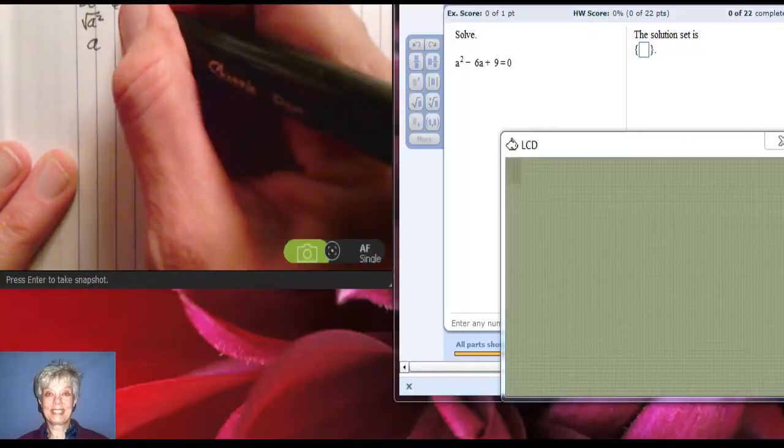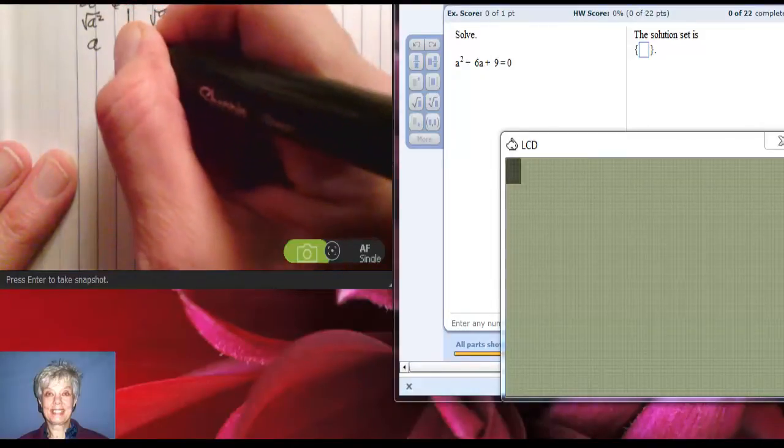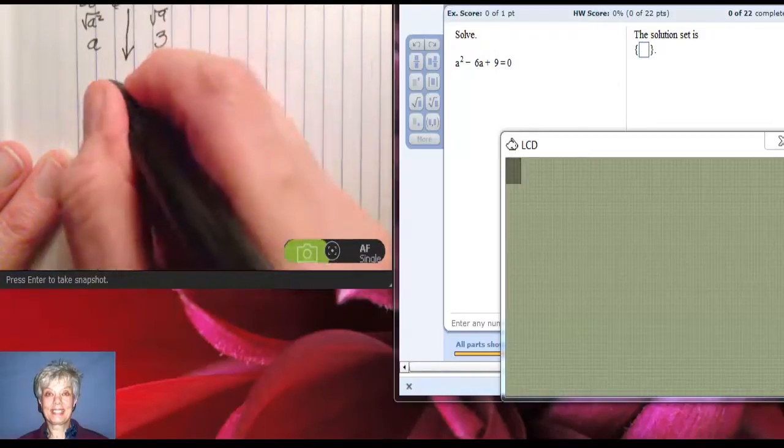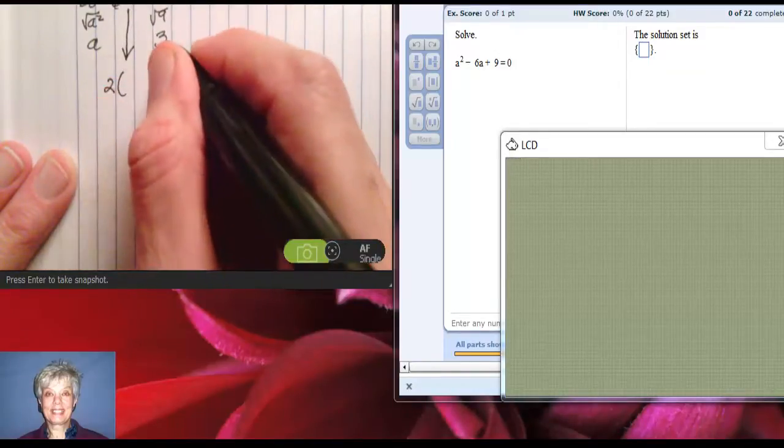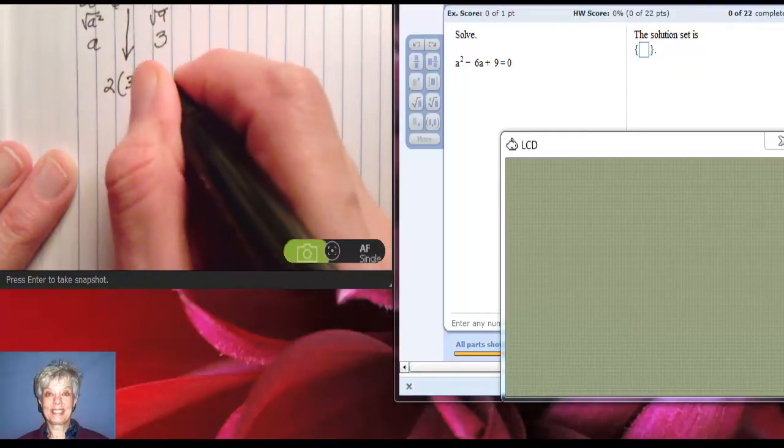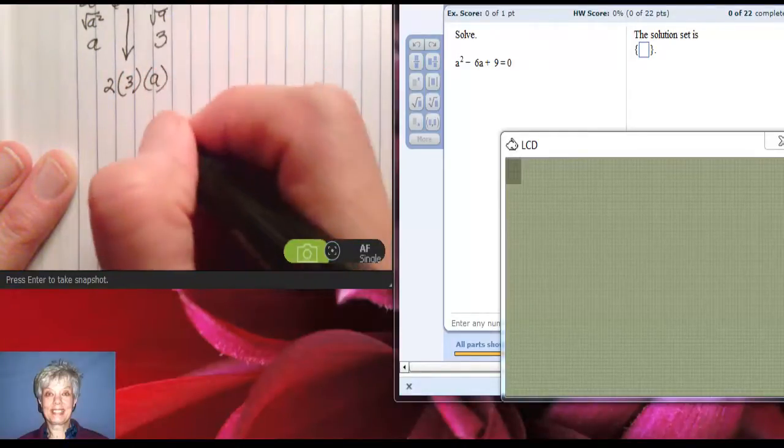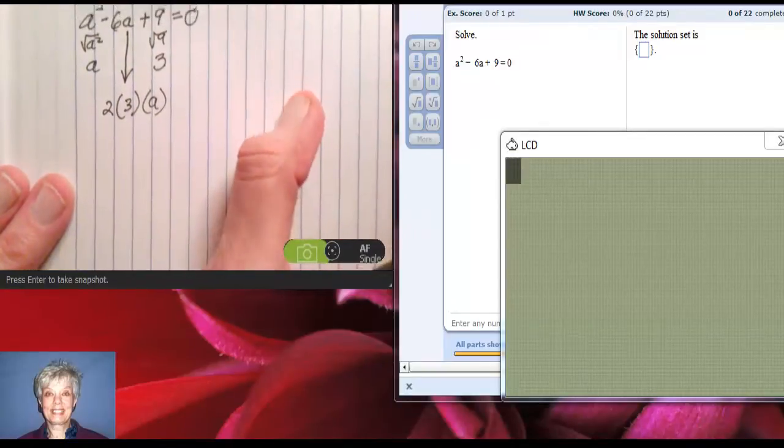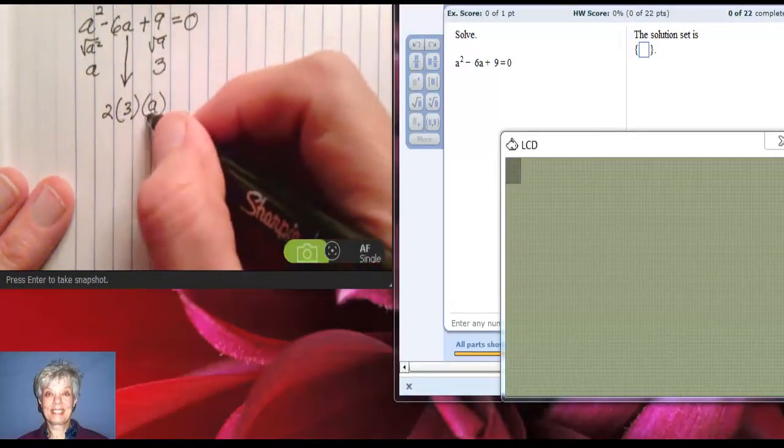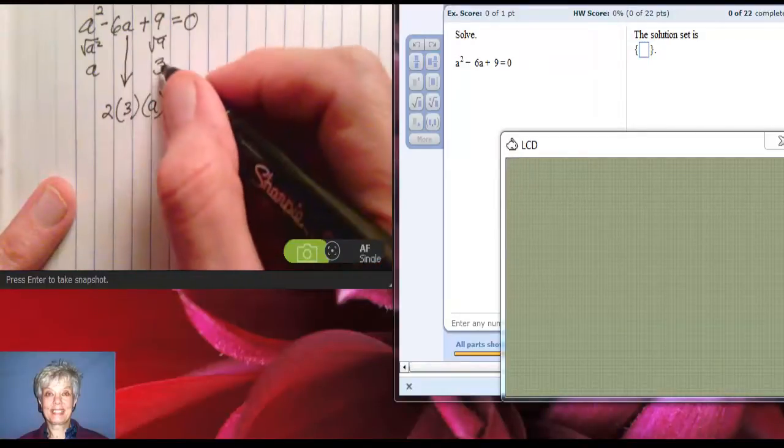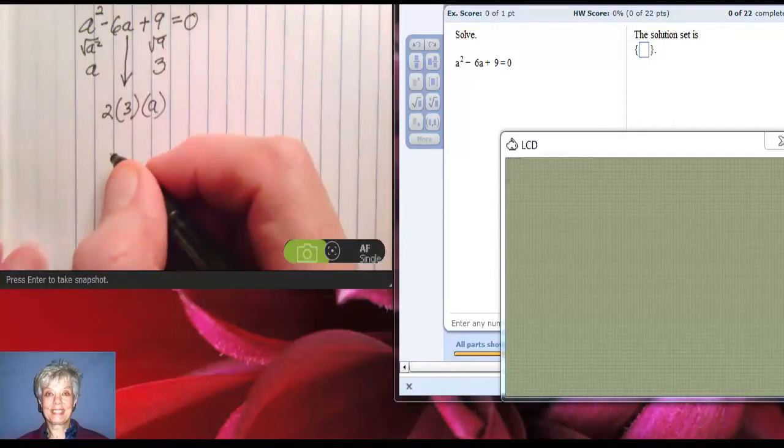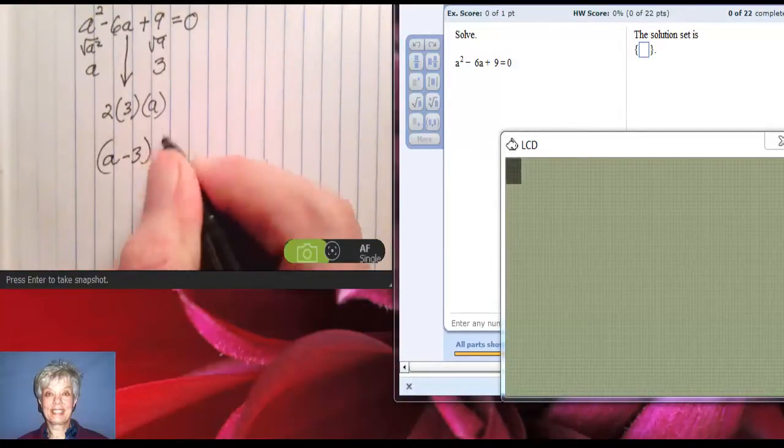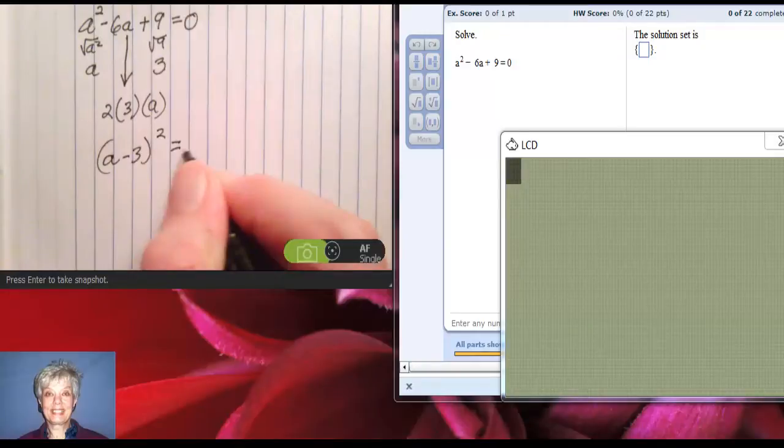Now if the middle term, not looking at the sign, equals 2 times 3 times a, then I have a perfect square trinomial. That's the test. So I now know that a² - 6a + 9 equals (a - 3)² = 0.